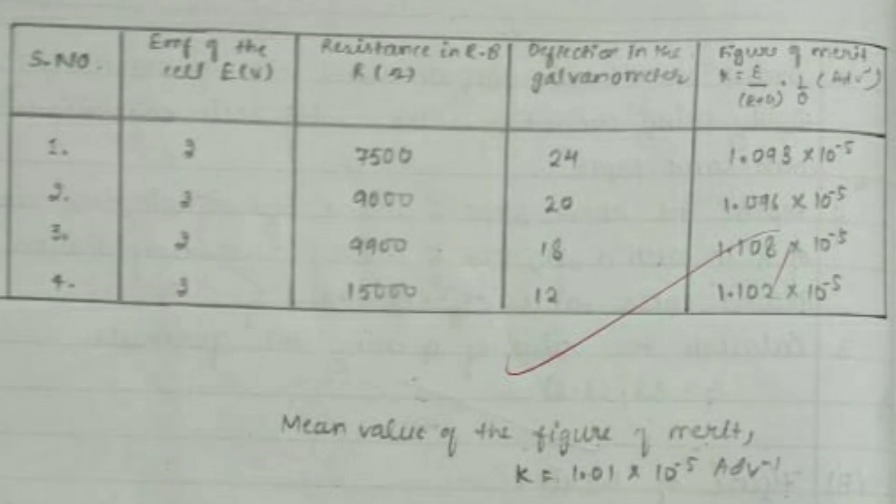This is the observation table that has been made after the practical has been performed. The mean value of the figure of merit, as you can see, has been calculated out to be 1.01 into 10 to the power minus 5 A/div.